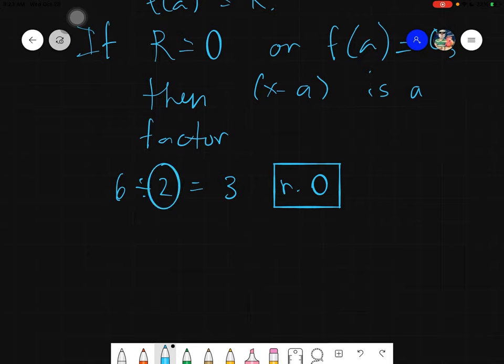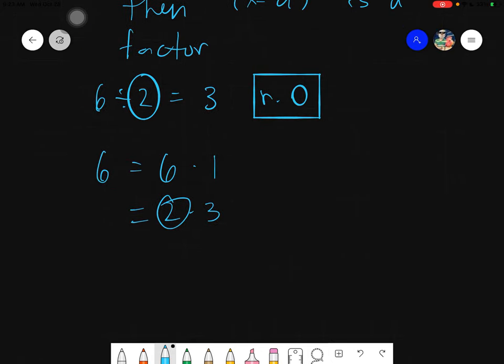The answer is of course 3 remainder 0. If this is the case, if the remainder is 0, then we can say that this divisor 2 is a factor of 6. Meaning if I have 6, the possible factors of 6 are 6 times 1, 2 times 3, and so on. So if you will check, 2 belongs here because 2 is a factor of 6.